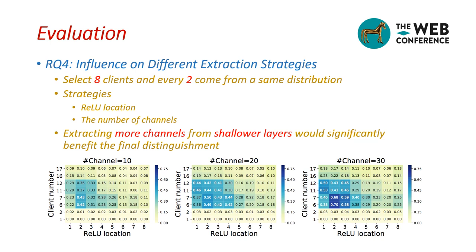For RQ4, we explore the influence of different extraction strategies. Specifically, we select eight clients from the simulated Office Home dataset, where every two clients come from the same distribution. The strategy is reflected by the value location and the number of picked channels. As shown in the figure, extracting more channels from shallow layers could significantly benefit the final distribution matching.